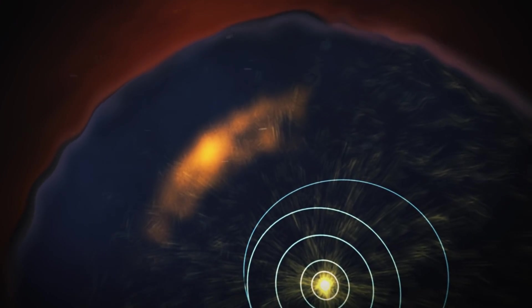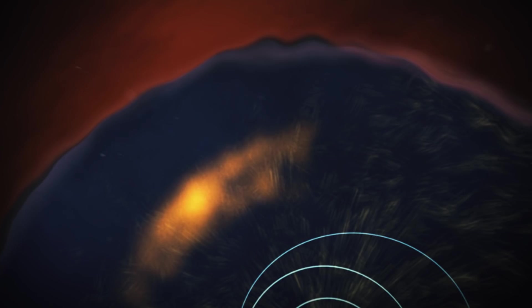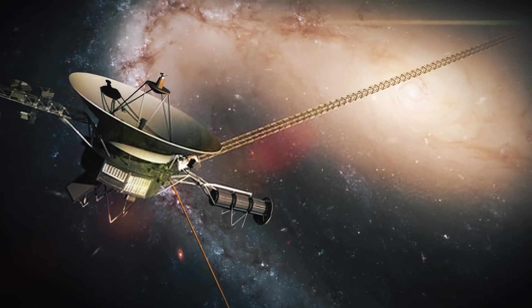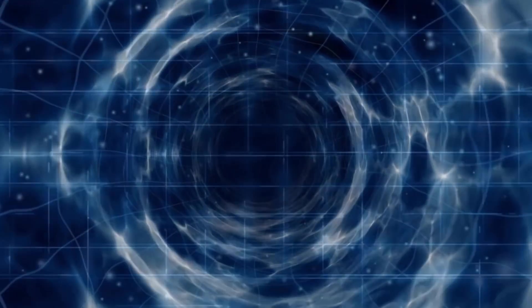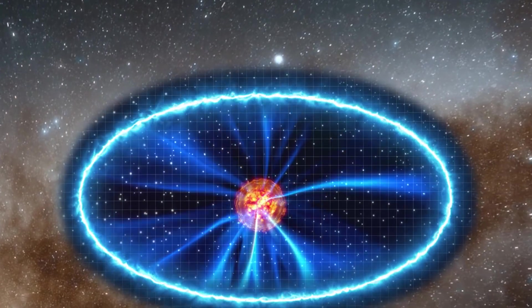In addition, Voyager 2 confirmed that the heliopause is one leaky border, and the leaks go both ways. Before Voyager 1 passed through the heliopause, it zoomed through tendrils of interstellar particles that had punched into the heliopause like tree roots through rock.